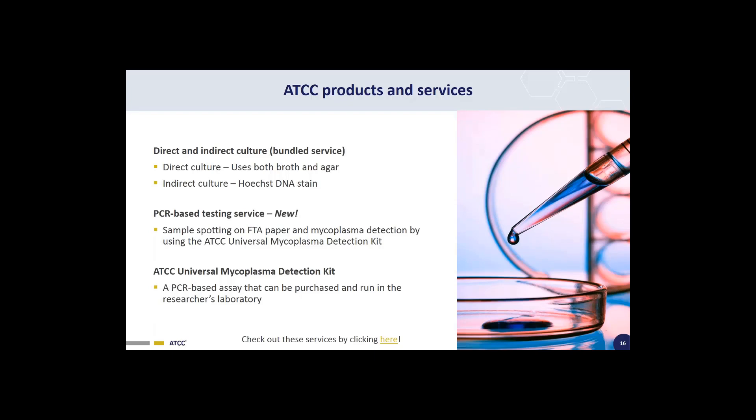Let's take a look at the products and services offered by ATCC to detect mycoplasma contamination. We offer all three types of mycoplasma detection methods: direct and indirect culture testing offered as a bundled service, where the direct culture uses both broth and agar and the indirect culture is a Hoechst DNA stain. Our newest service offering is a PCR-based testing service where cells are spotted on FTA paper and processed in our lab using ATCC's mycoplasma detection kit. The mycoplasma detection kit can also be purchased as a product on our website, allowing researchers to run the assay in their own lab.